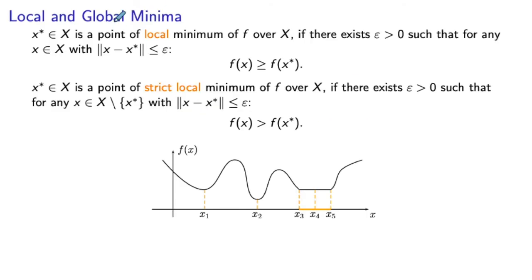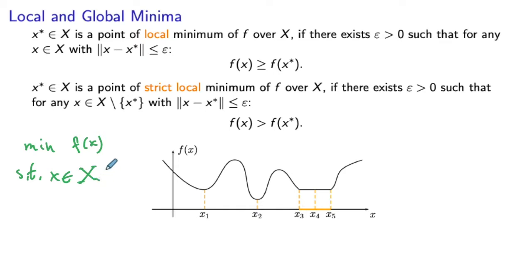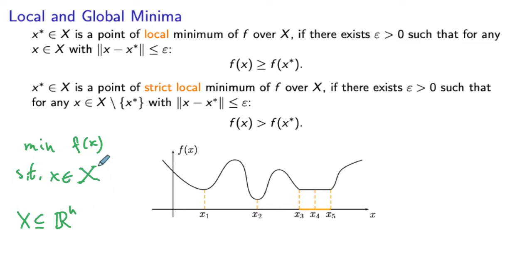So what is a local minimum? We are talking about a general problem, which is to minimize f of x subject to x belonging to some set X. This set X is a subset of the Euclidean space of dimension n, and typically it is defined by a set of functional constraints. For example, you could have: minimize f of x such that g of x is less than or equal to zero. Whenever we want to keep it general, we specify the constraints in the set form.